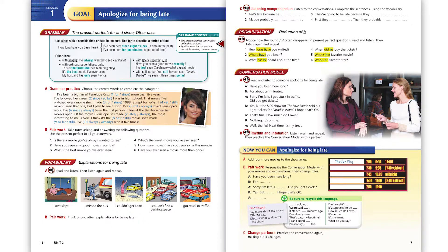Page 17. Conversation model. Exercise B. Rhythm and intonation. Listen again and repeat. Then practice the conversation model with a partner.